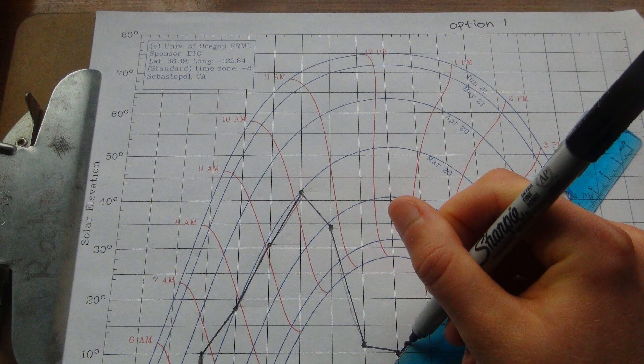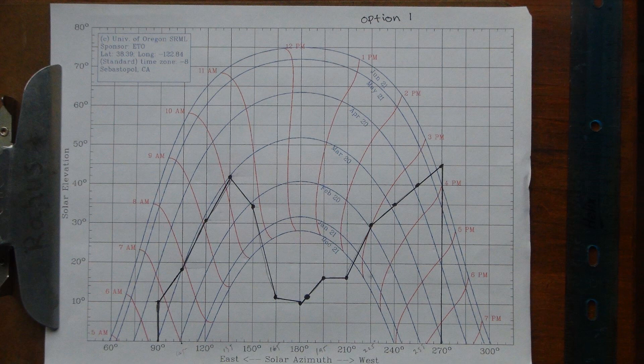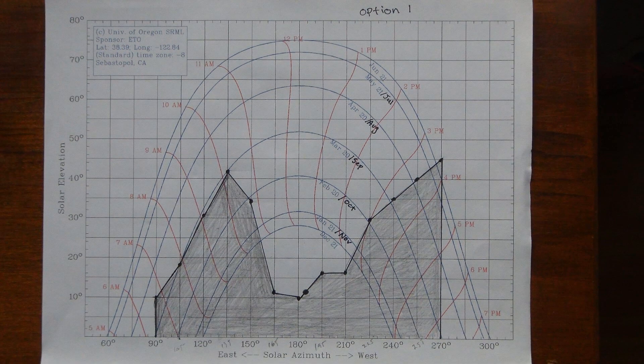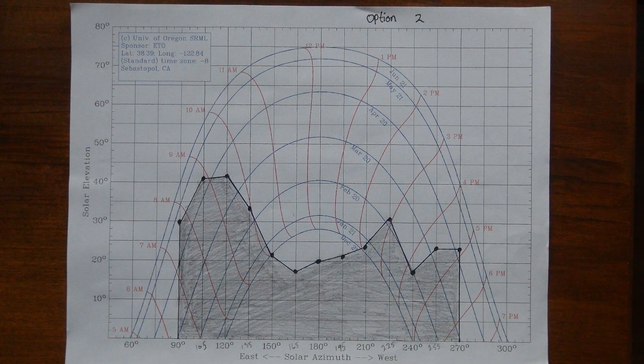Next, connect the dots on the sun path chart and shade in the area under the line you have drawn. The area under the line shows the approximate area of the sky that will be shaded at this location throughout the year. Repeat the analysis at other candidate spots for solar panel placement using a fresh sun path chart printout for each option.